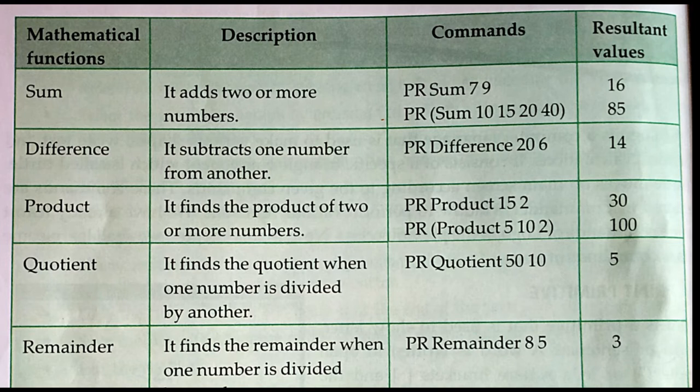In the same way, we can take the remainder or modulus. PR remainder 8 5 — when we divide 8 by 5, we will get the remainder as 3. In this way, we can display the result by using the PR command.